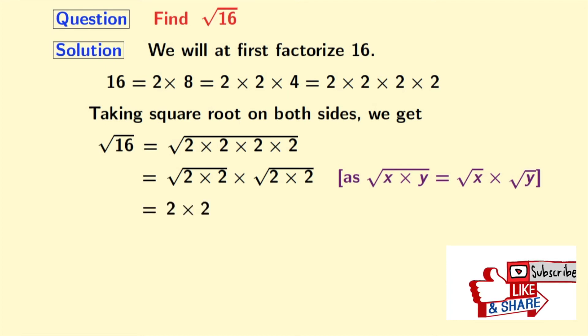Simplifying, we get 2 times 2. As we know that square root of a times a is equal to a. Here, a is 2 in both the square roots.